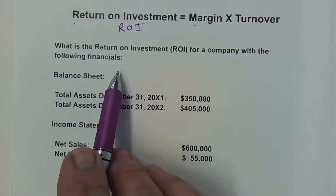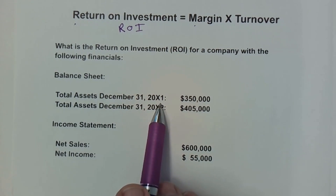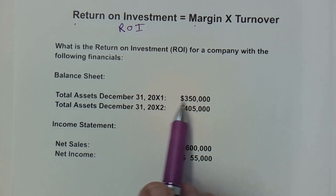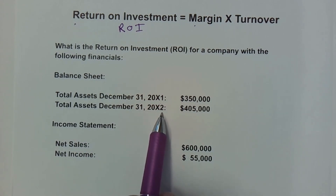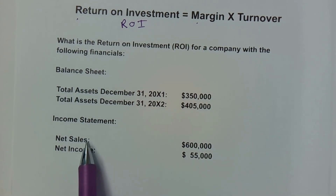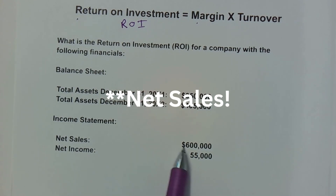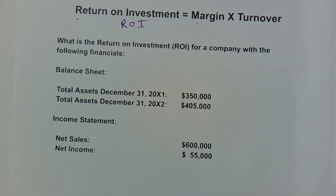We have a particular company with the following financials. On the balance sheet, total assets at the end of the prior year were $350,000, and total assets at the end of the current year are $405,000. Net sales for the year are $600,000, and net income is $55,000. Let's figure out the return on investment using the DuPont model.